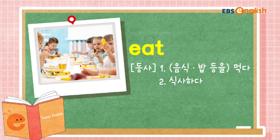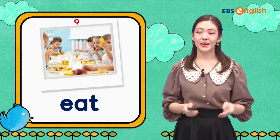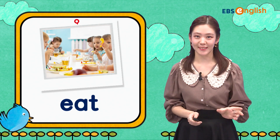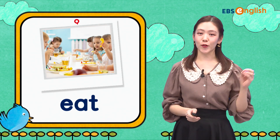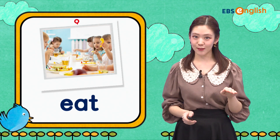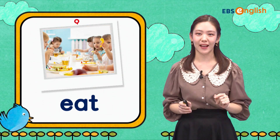Eat. 오늘 배울 동사 eat는 음식 혹은 밥을 먹다, 식사하다 라는 뜻이에요. 함께 발음해 볼까요? Eat. 앞에 이 발음이 정말 길죠? 우리가 어떤 물건을 가리킬 때 쓰는 IT와는 발음이 확실히 다릅니다.